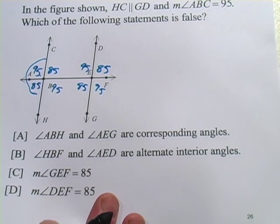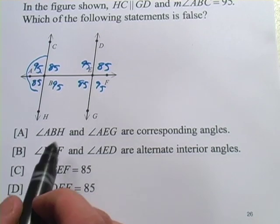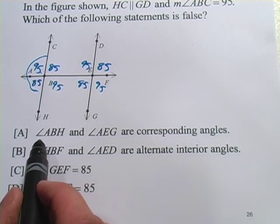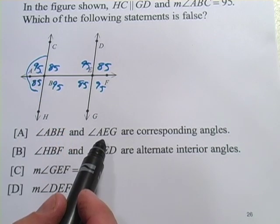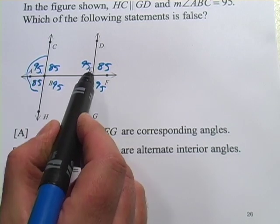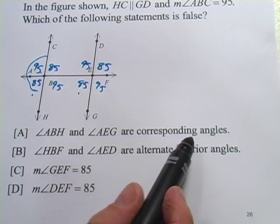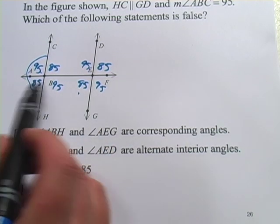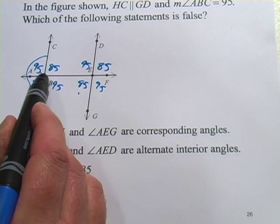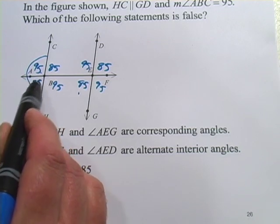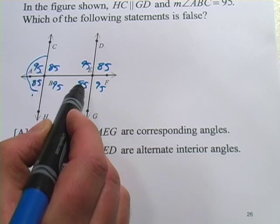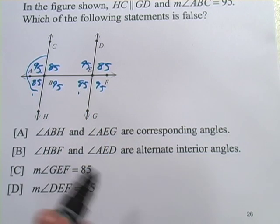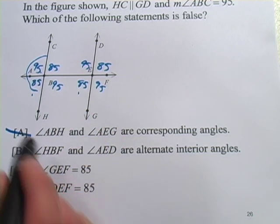Now, let's take a look at these statements. Remember, we're trying to find the one that's false. A says ABH, so that's this angle right here. And AEG, that's this angle right here. So this angle and this angle are corresponding angles. And that's true, they are. The transversal crosses this line here, makes this angle below it. Then the transversal crosses the second line, makes this angle below it. Those correspond. So that's true, not what we're looking for.